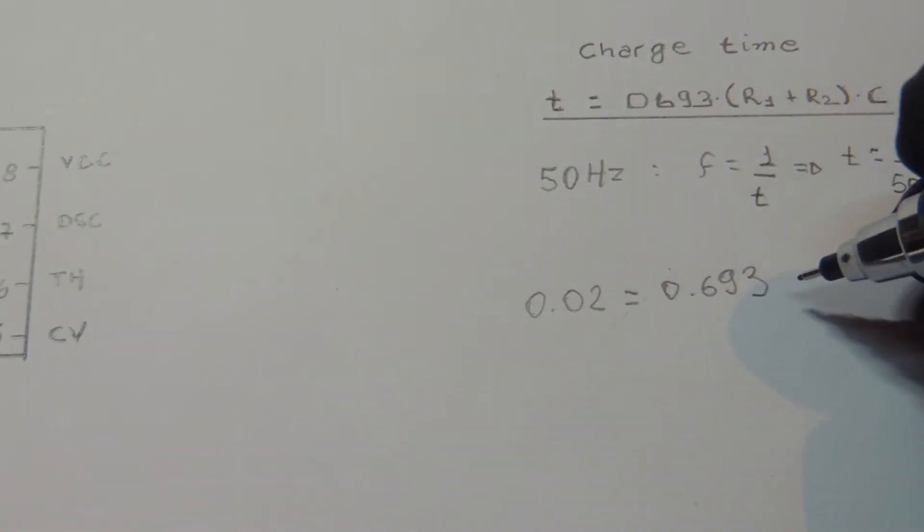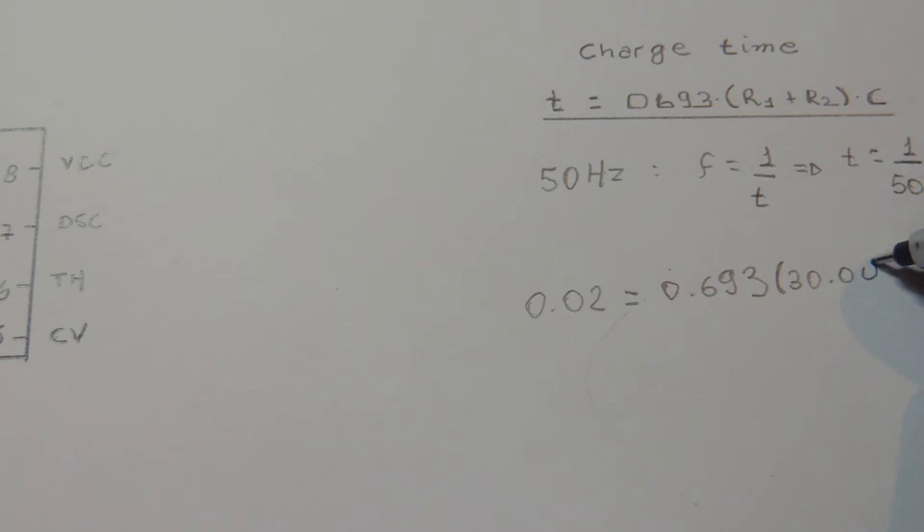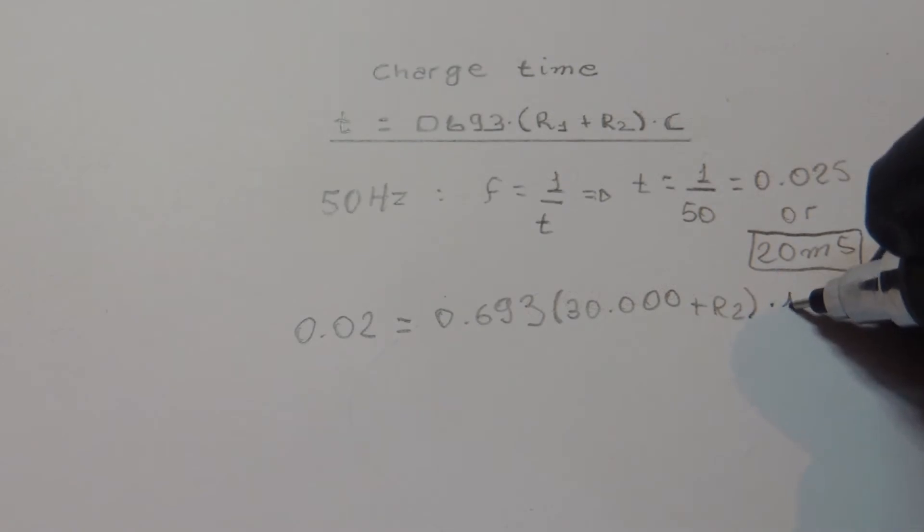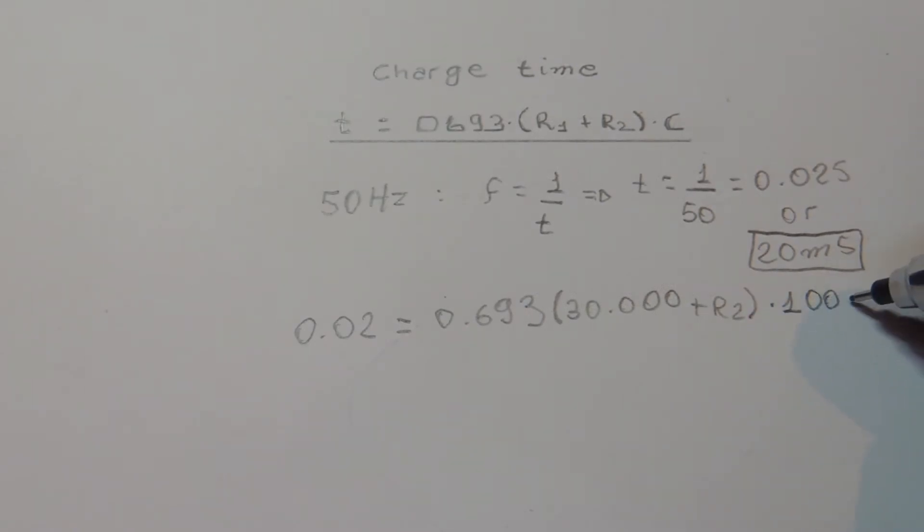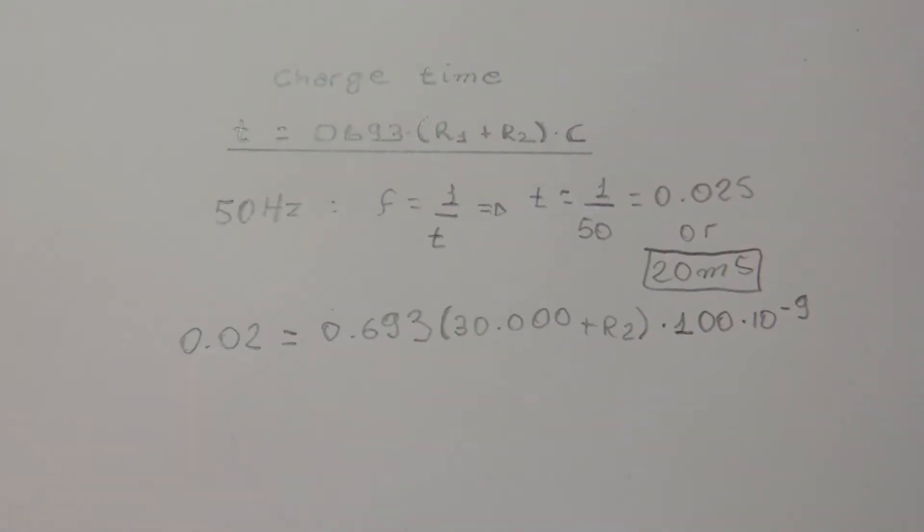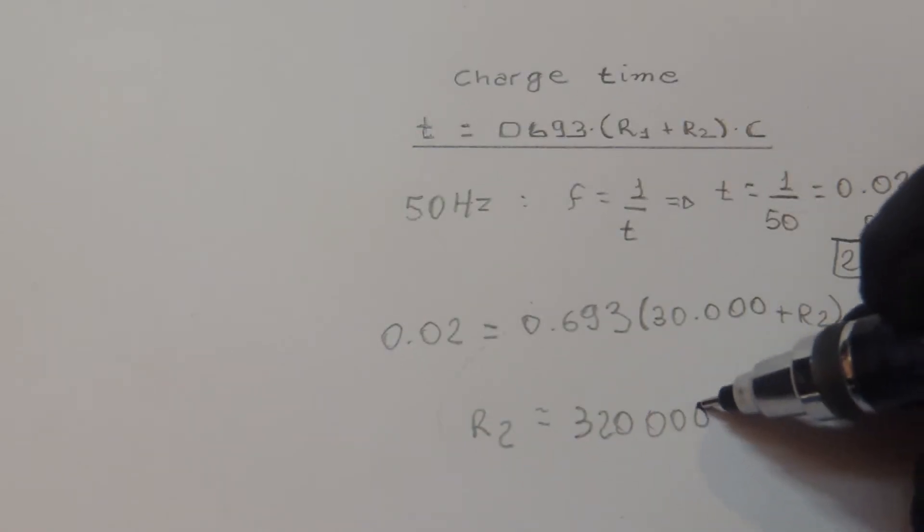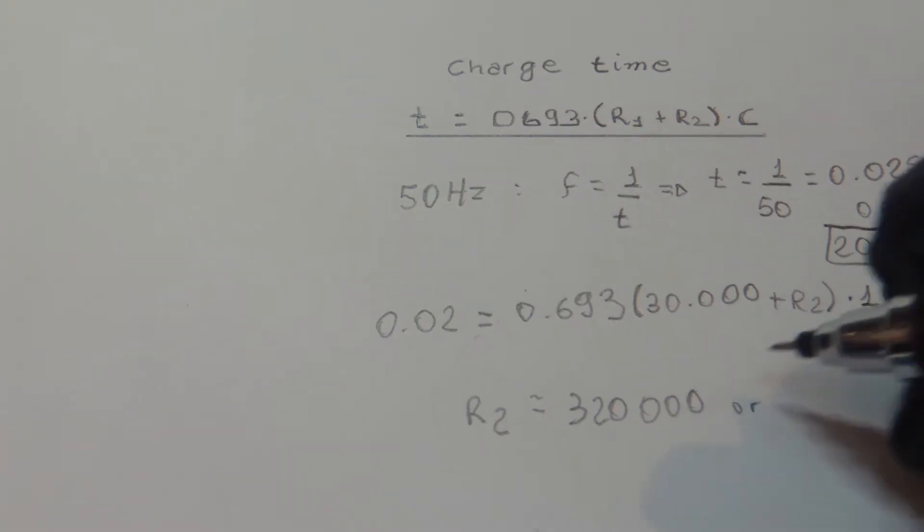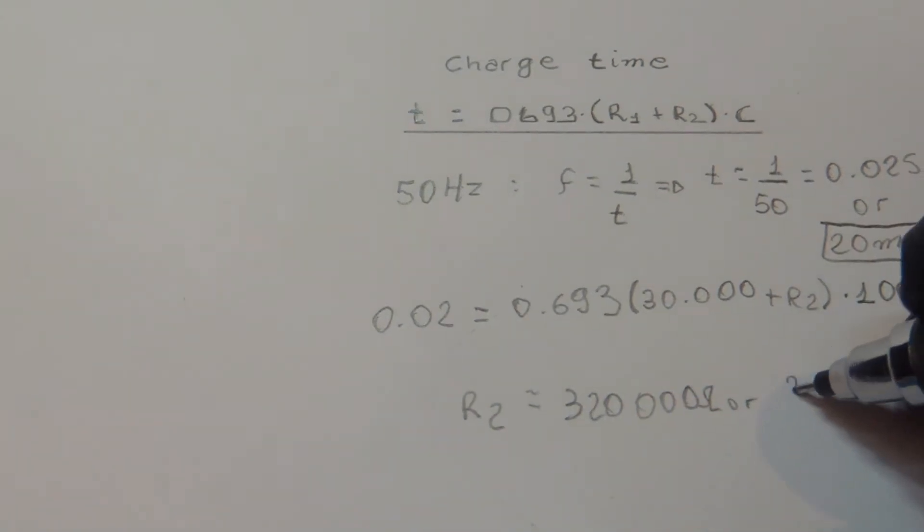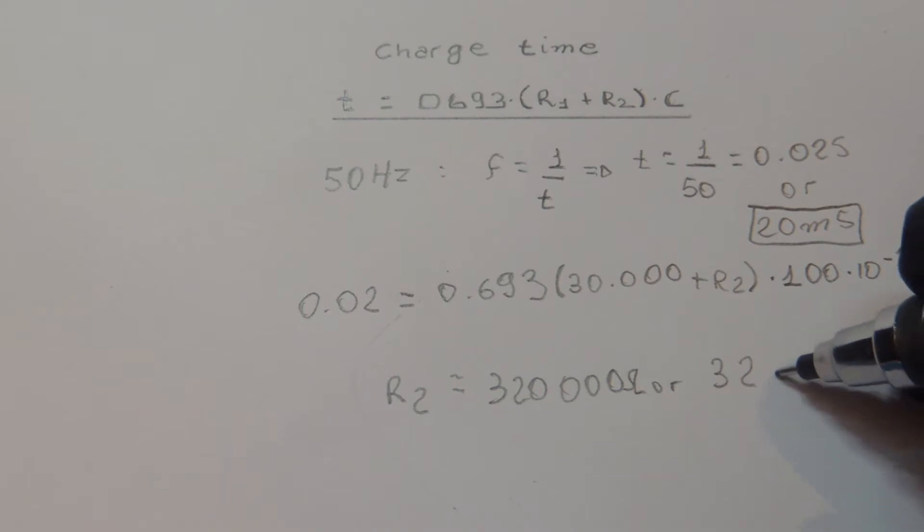For R1, as I said, I decided to use a 20k pot in series with a 10k resistor. It gives a value of 30,000 ohms. So we want to find out the value for R2. I also decided to use a 100 nF capacitor. It was the highest value I had on hand. So if we solve this equation, we are able to find the value for R2. I found a value of 320k and I used a 330k resistor as the closest value I had.